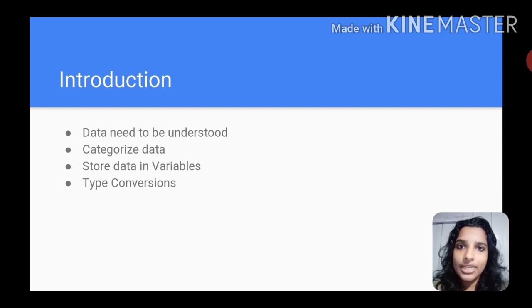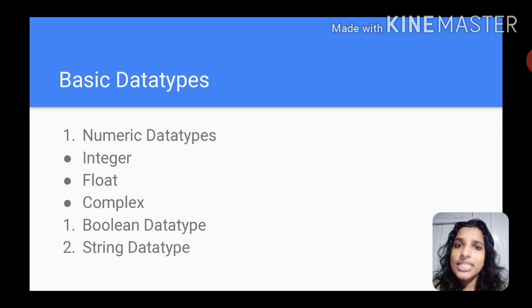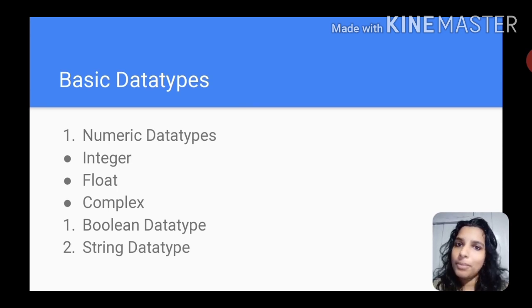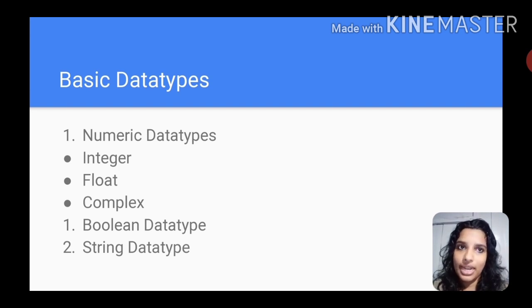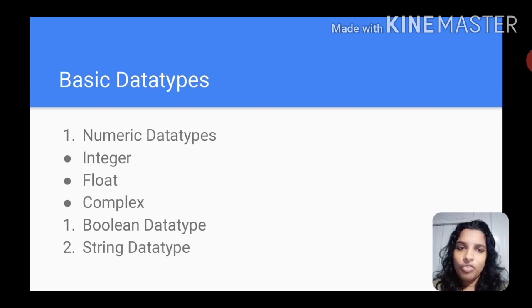I will answer the question. I will write the number, I will write the string. Basic data types in Python include numeric data types. Numbers are numeric data types — called integer, float, and complex number. So numeric data types are integer, float, and complex.